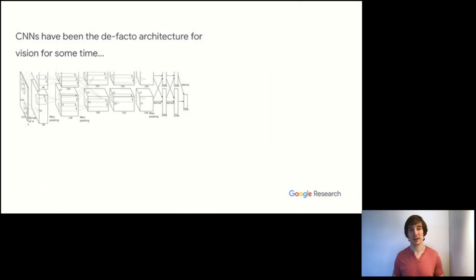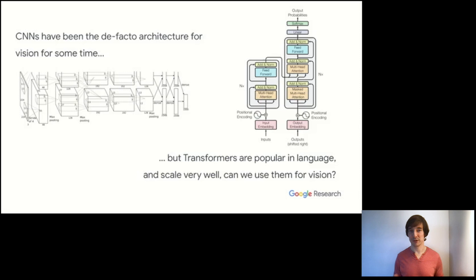Convolutional neural networks have been the go-to architecture for computer vision for some time now, having become particularly popular around 2012, and they performed very well on many vision tasks. However, in other domains, particularly language, the transformer has emerged as a very performant network and has also been shown to scale very well, for example, with models like GPT-3 and M4. And so what we look at in this paper is, can we make use of the pure transformer network for computer vision?